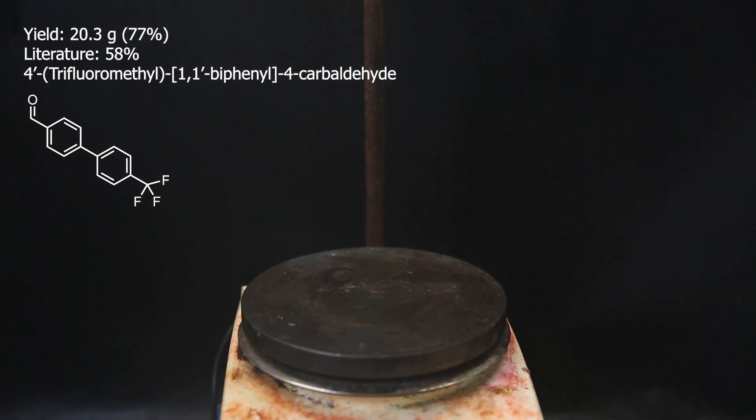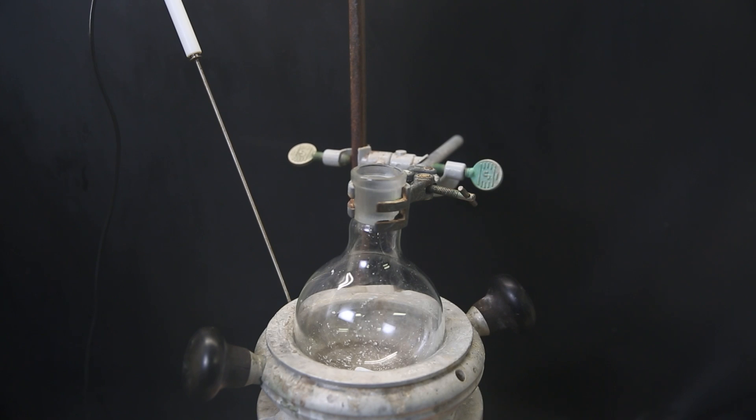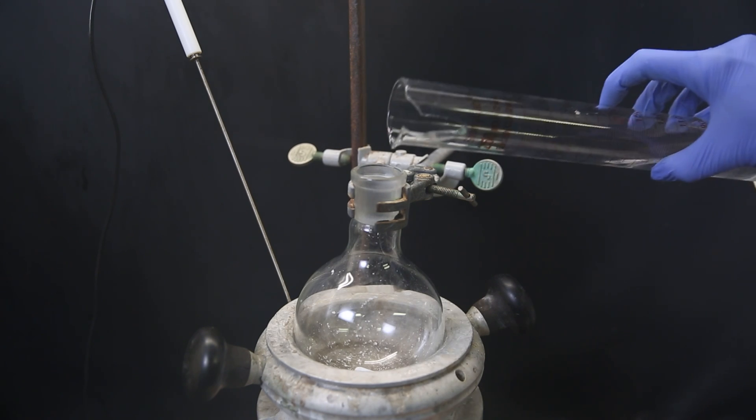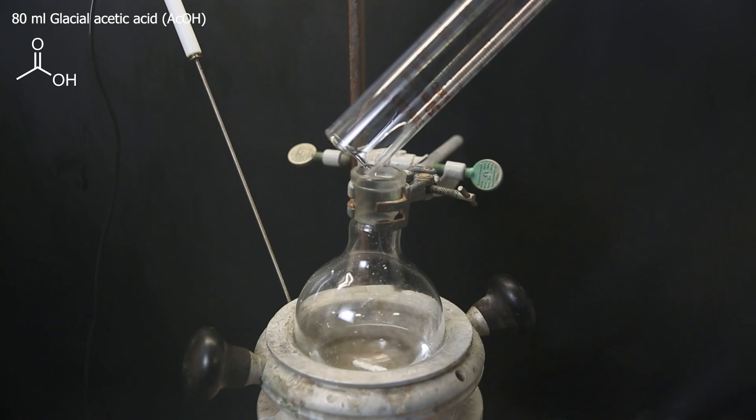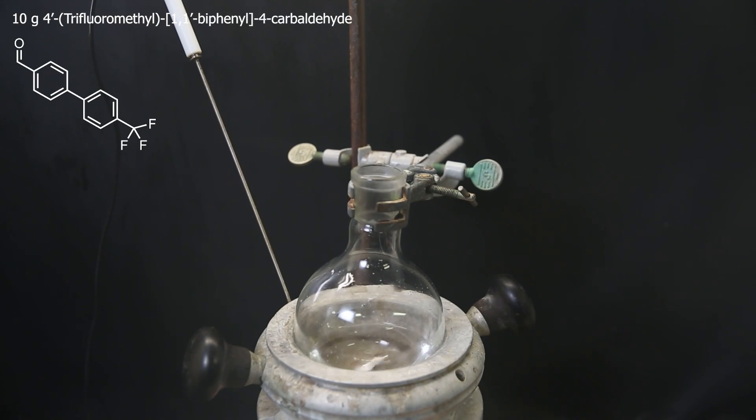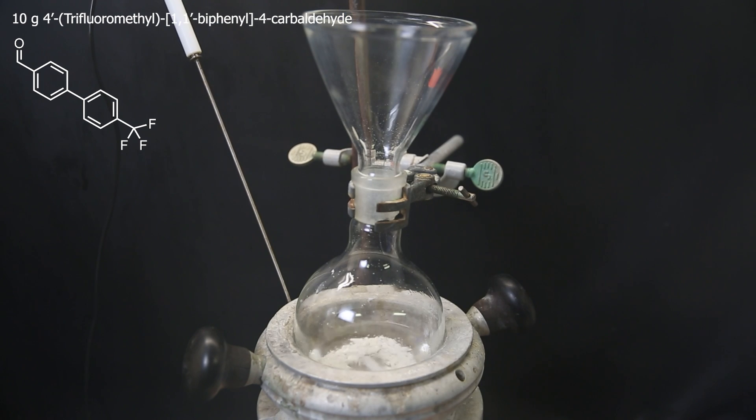Anyhow, moving on with the next and final reaction. I set up the flask that contains the product residue in a heating mantle and add in 80 ml of glacial acetic acid. I add in 10 grams of the previous product as the first reactant.